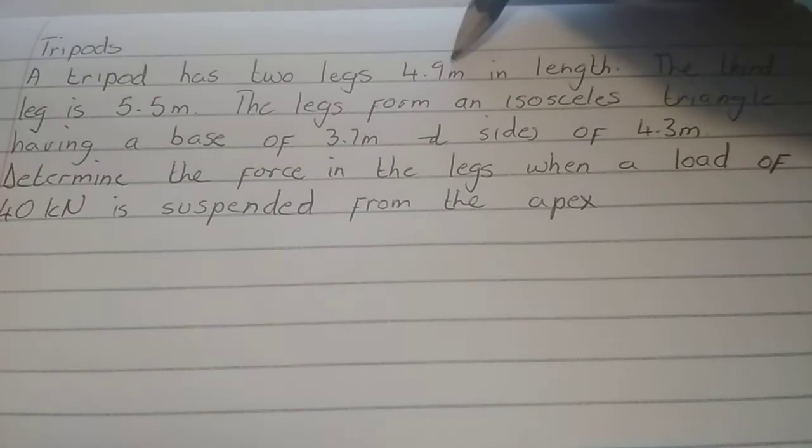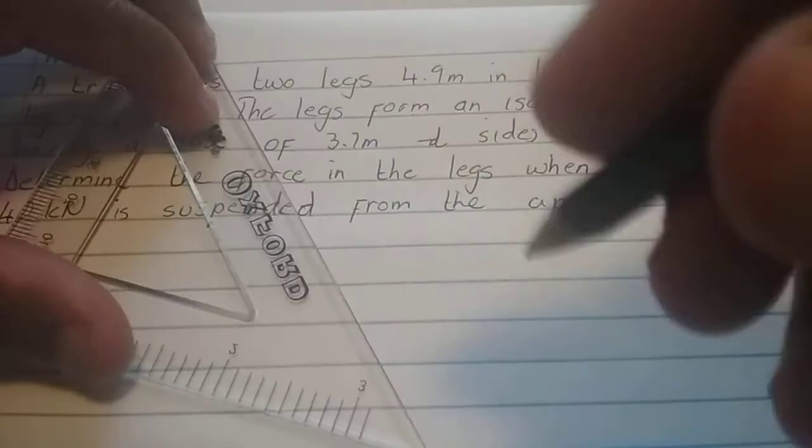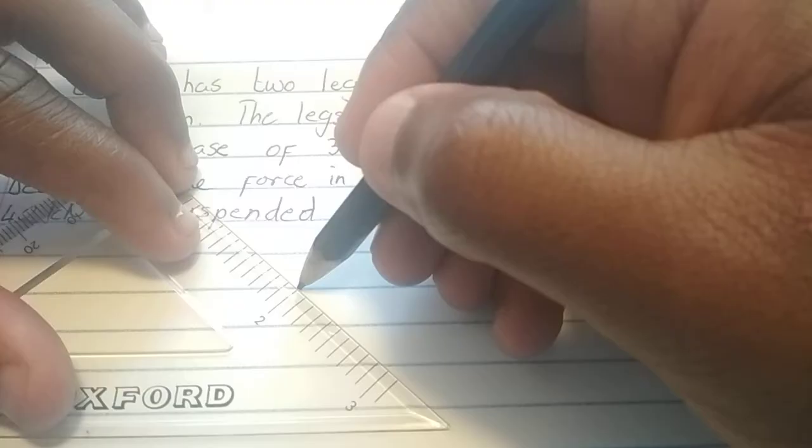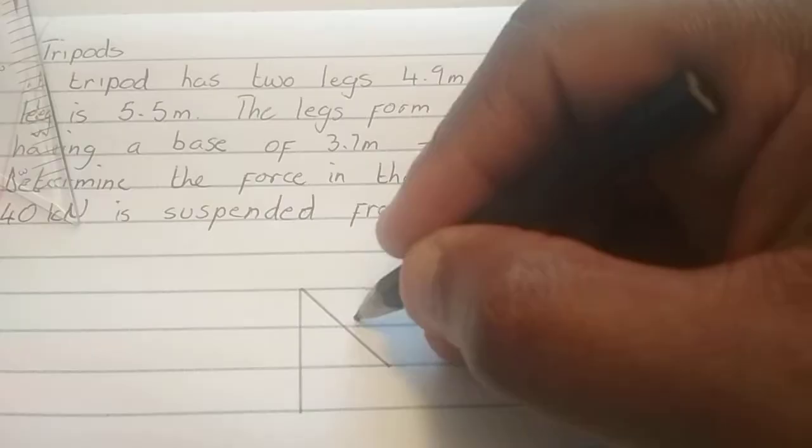A tripod has two legs 4.9 meters in length. So we'll just do a rough sketch here. Remember a tripod has three legs in total. So two of them, that will be one of them, that will be another one. And each of these legs 4.9 meters.